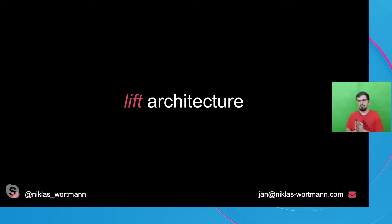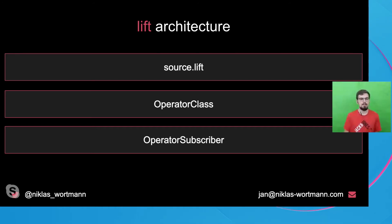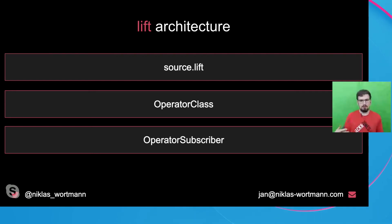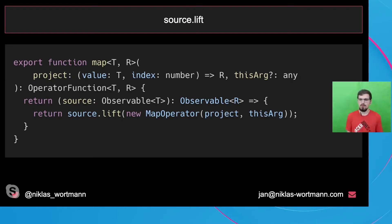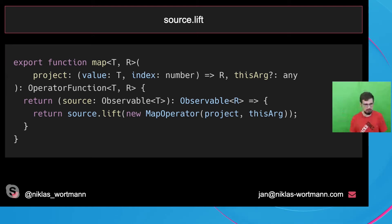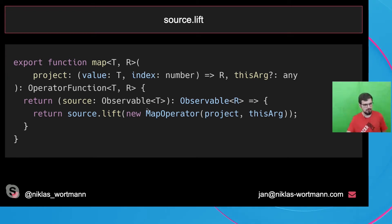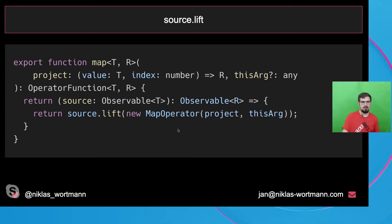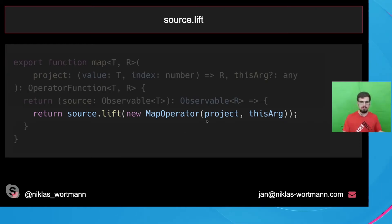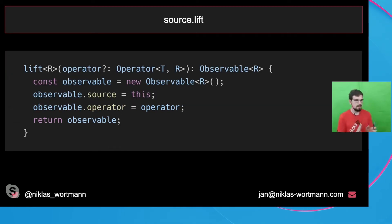The lift architecture was introduced with RxJS 5 — that was actually the big thing of RxJS 5. It consists of three important steps: an observable lift method that gets called, an operator class, and an operator subscriber. To walk through this lift architecture, I'll use the map function as an example, since map is fairly well known within the community.